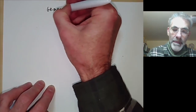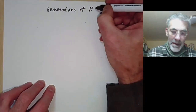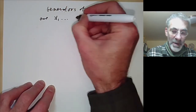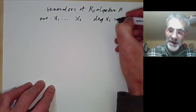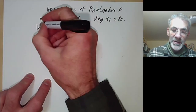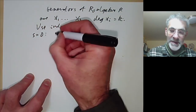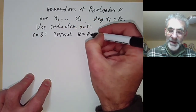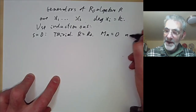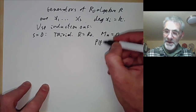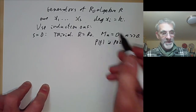How do we prove this? It's fairly easy. All we have to do is suppose the generators of the R_0-algebra R are x_1, …, x_s, where the degree of x_i is k_i. We use induction on s. For s = 0, this is trivial, because then R = R_0 and M_n = 0 for n sufficiently large, so the Poincaré series is just a polynomial — its coefficients are the numbers λ(M_n).